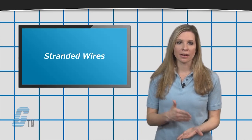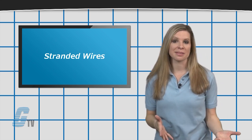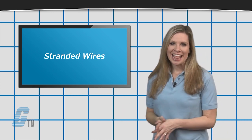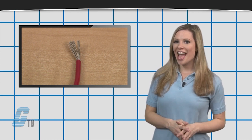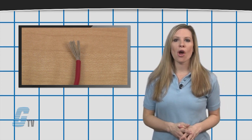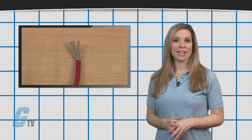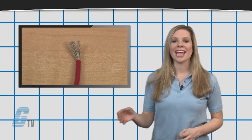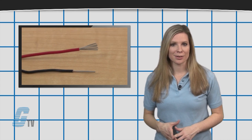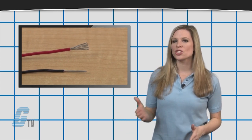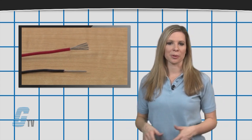Stranded wire is made of a bundle of metallic wires and provides greater flexibility. These are often used in wiring circuits, control products, as well as small electrical devices. They provide a greater surface area for making a connection. Due to their flexibility, there is less of a chance of breaking a stranded wire through movement than their solid counterpart.